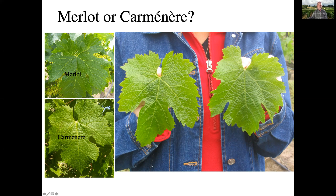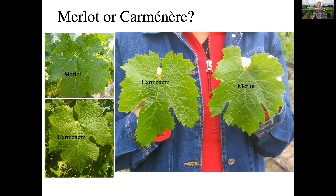Here's an example. On the left up here we have a Merlot leaf, and down below is a Carmenere leaf. I have my beautiful assistant here, my wife, holding those leaves next to each other. Now use your training to look at the sinuses, the shape of the sinuses, and the leaf margins, and tell me which grape leaf is Merlot and which is Carmenere. The answer is the left one is Carmenere and the right one is Merlot. How did you do? It's not easy, is it?